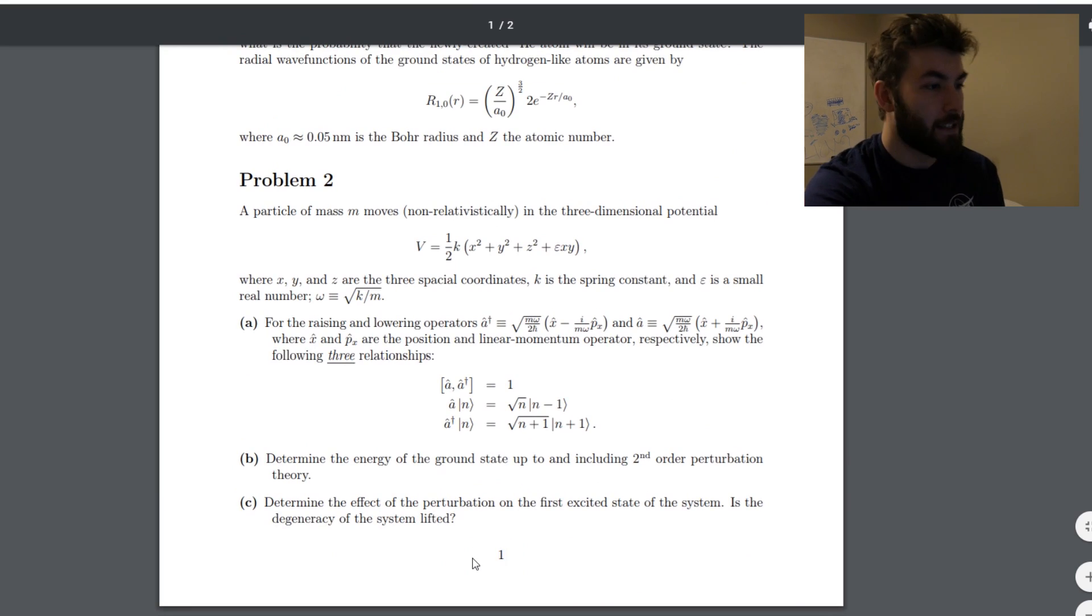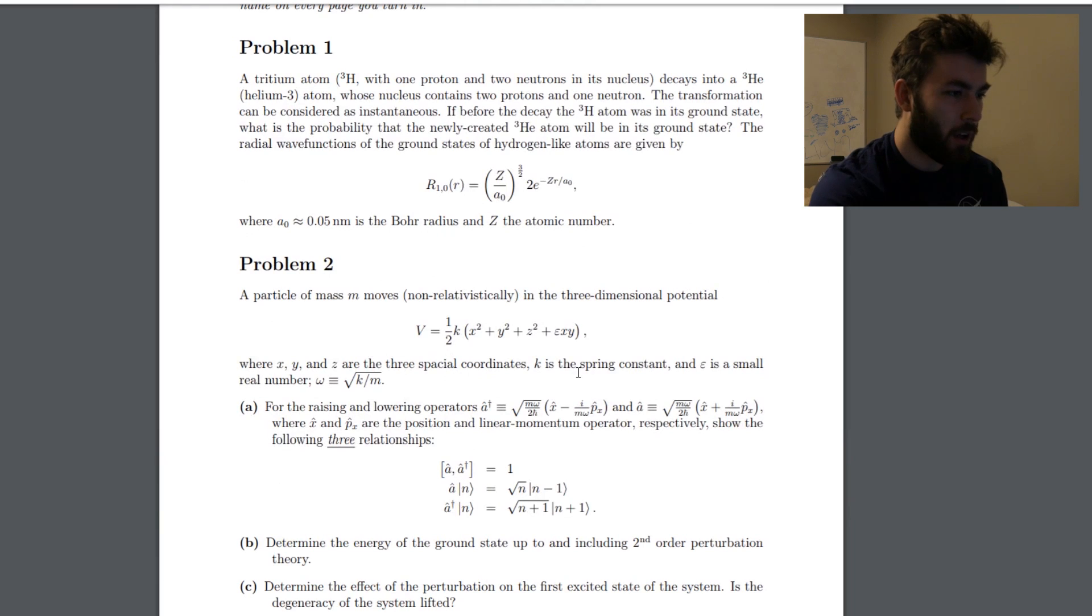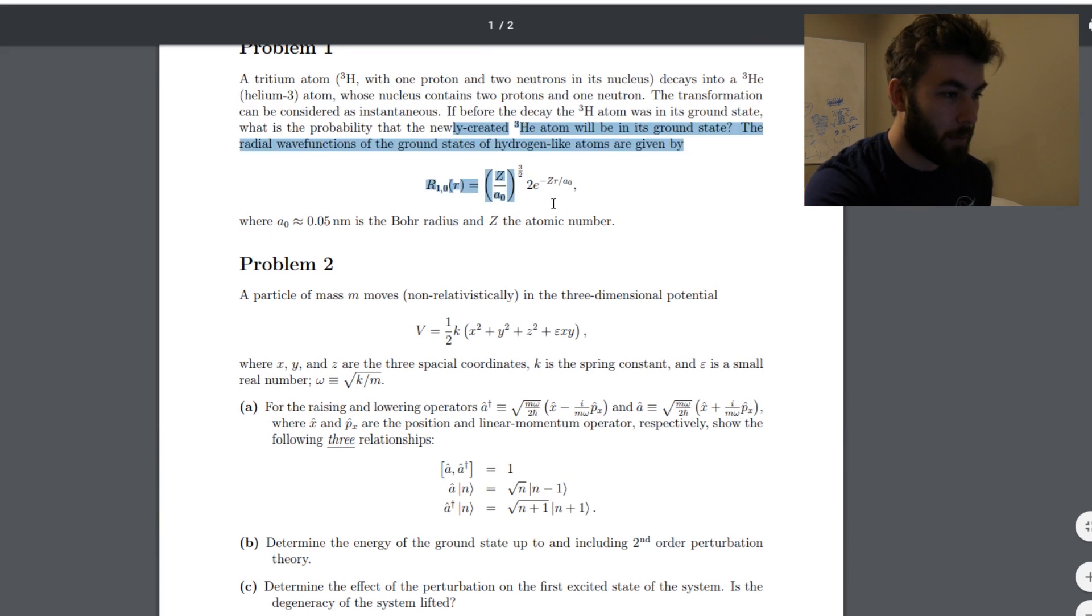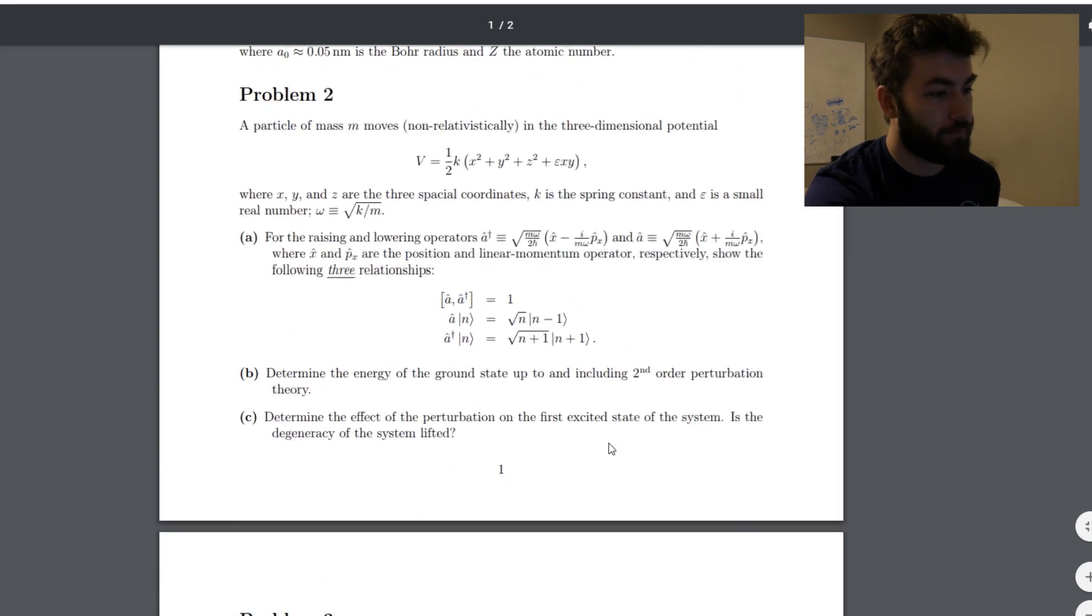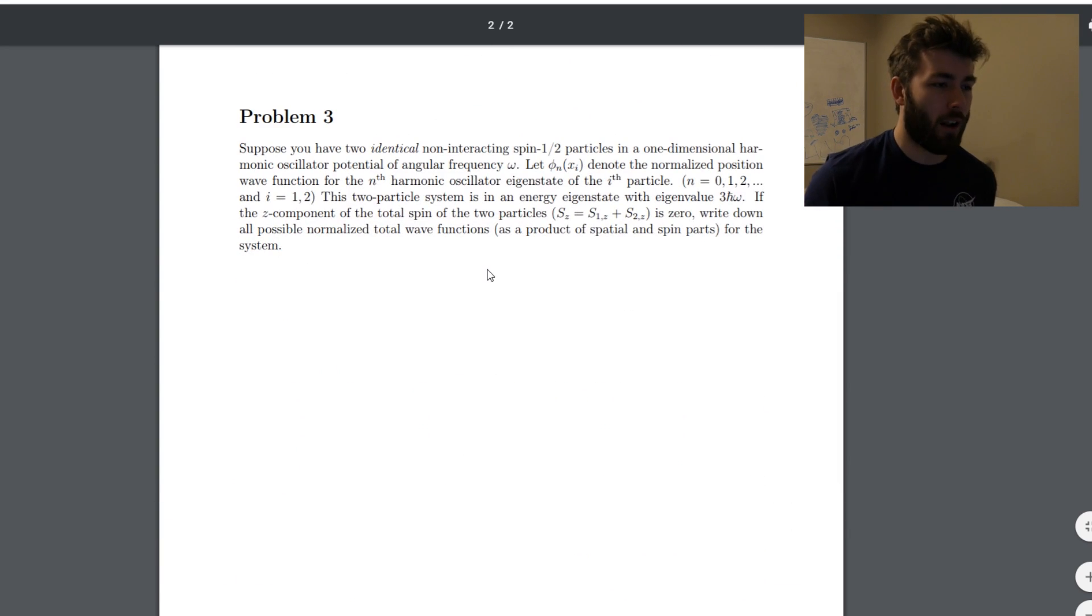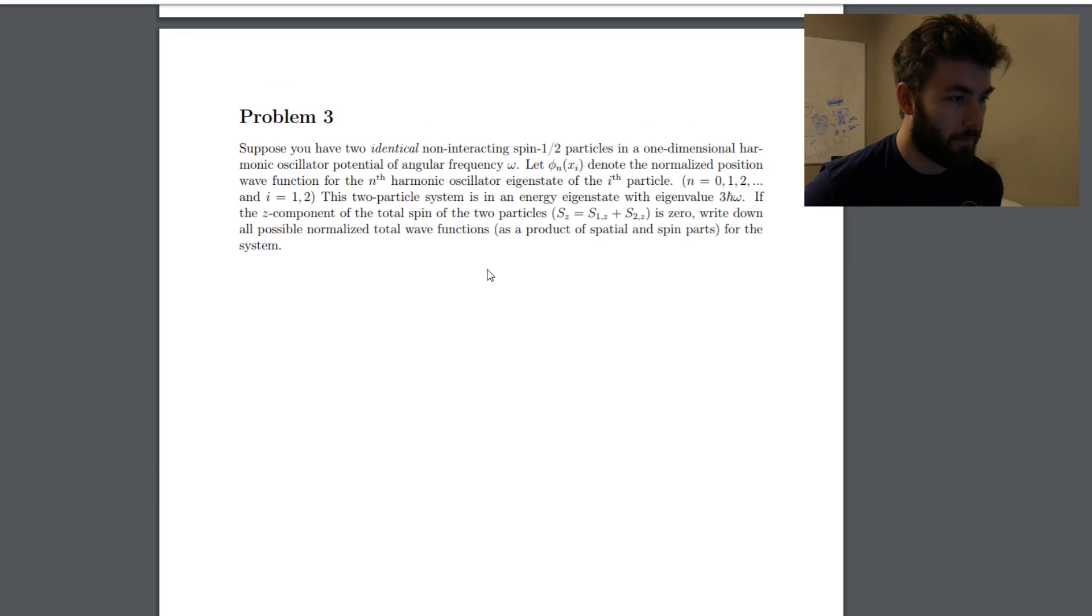They actually seem downright kind of easy. The harmonic oscillator, I mean, you kind of beat it to a pulp in grad school and undergrad. This is just a basic probability where you only have to consider the radial part of a wave function. And then it's a product of spatial and spin parts of the wave function, but it seems like you have identical, non-interacting, spin one-half.